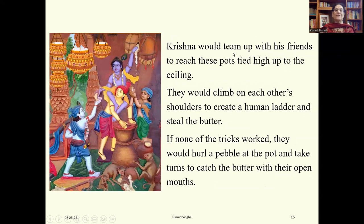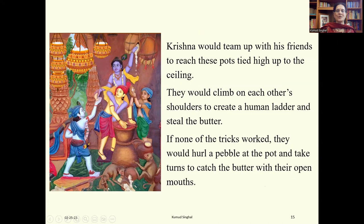But Krishna and his friends were very smart. Krishna would team up with his friends — they would climb on each other's shoulders to create a human ladder and steal the butter. If none of the tricks worked, they would hurl a pebble at the pot and take turns catching the butter with their open mouths. The pot broke and the curd and butter fell into their mouths. The monkeys also ate the butter and cream which fell on the ground.